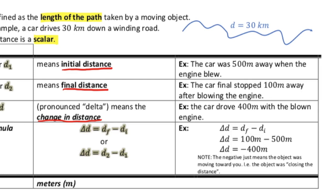So obviously, you know that between 500 and 100 meters away, the car was just sort of limping along. So the car drove 400 meters with the blown engine. And the way to look at that is we can calculate delta D.